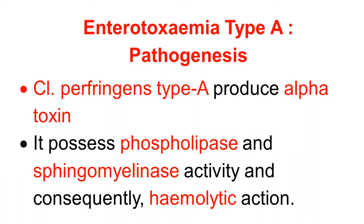Friends, we discuss here the pathogenesis of enterotoxemia type A. The disease is caused by Clostridium perfringens type A, and it produces a potent alpha toxin which is responsible for causing pathogenesis and disease. Alpha toxin possesses phospholipase and sphingomyelinase activity, and it causes hemolytic action in the animal, resulting in serious consequences including hemolysis of the blood.